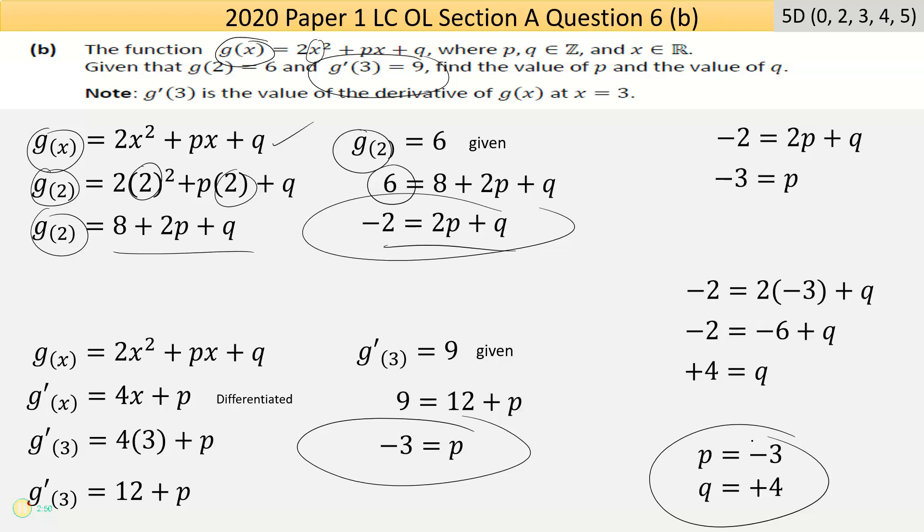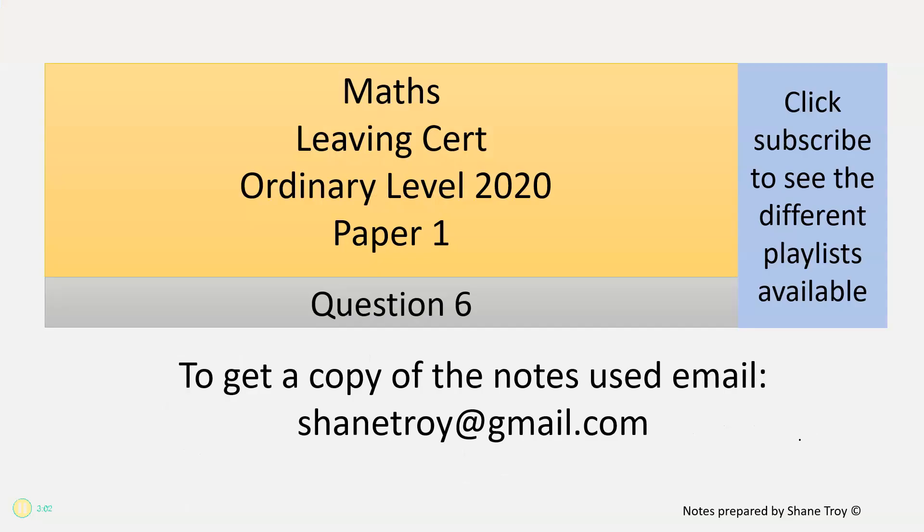That should be the answer from the next page, and it is. So there's my two values of p and q. I could test them and put them back into the equation to see if it works, but I'm not asked that and it's taking us loads of time. You don't have endless amounts of time, so it's time to move on. That's the end of question six from Paper 1, Leaving Cert Ordinary Level 2020. If you want these notes, send me an email at shanetroy@gmail.com. If you click subscribe, you'll get access to more playlists. Cheers, thank you.